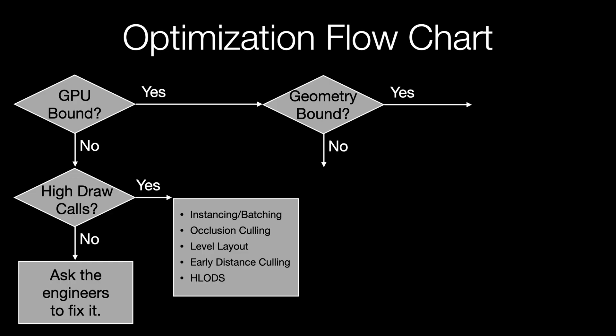When you're GPU-bound, there are generally two categories of things that can cause the problem. Either you're geometry-bound, meaning your scene has too many triangles, or you're pixel-bound, which means it's taking too long to calculate the color of each pixel on the screen. I'm going to break down these two situations separately.